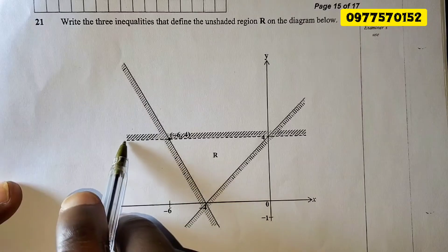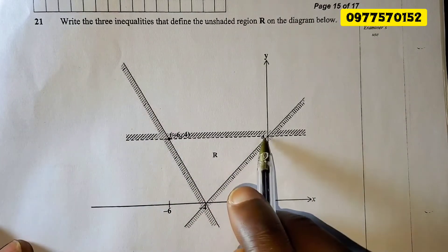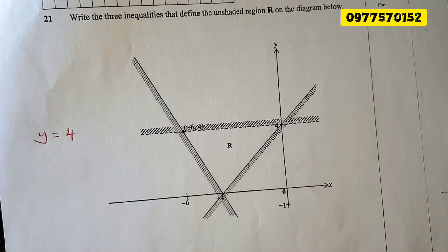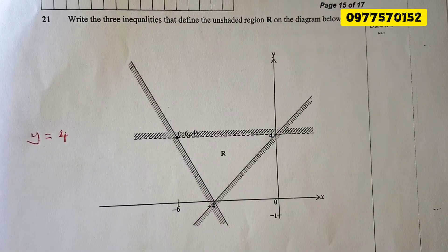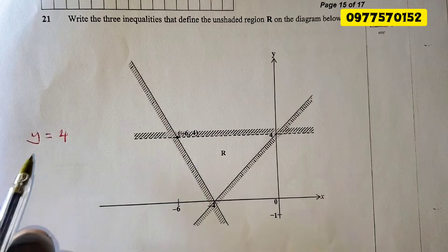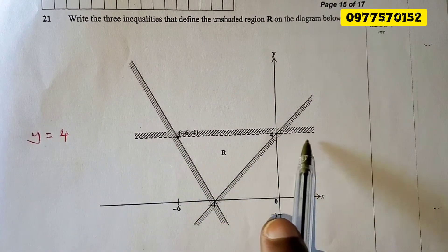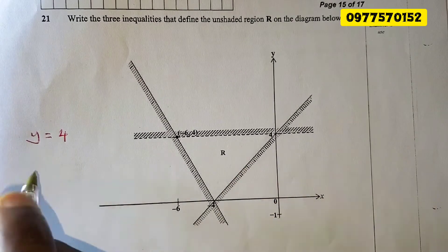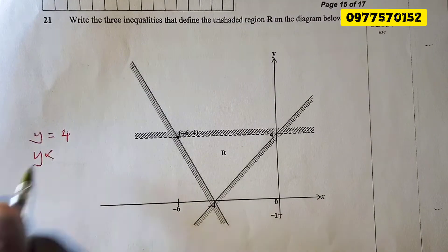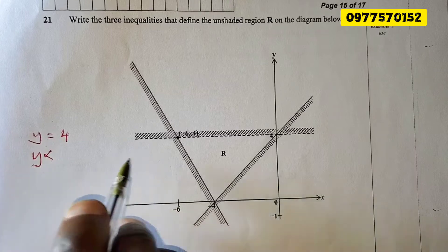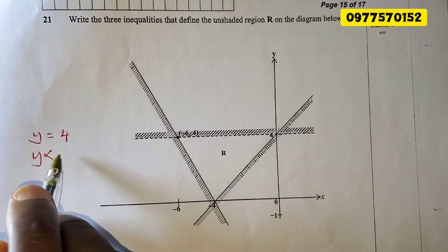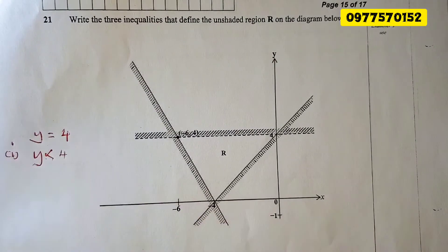This line is cutting the y-axis. Y equals 4 — that is the equation, but that is not the final answer. We need to write it in the form of an inequality. The shading is on the greater-than side, and the wanted region is on the less-than side, so we say y is less than. The line is a dashed line, so we do not include 'or equal to.' The first inequality is y < 4.